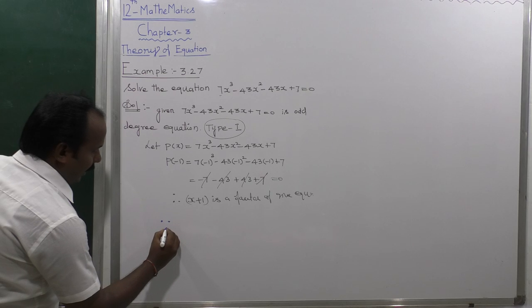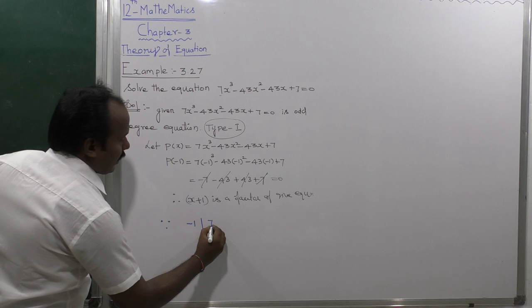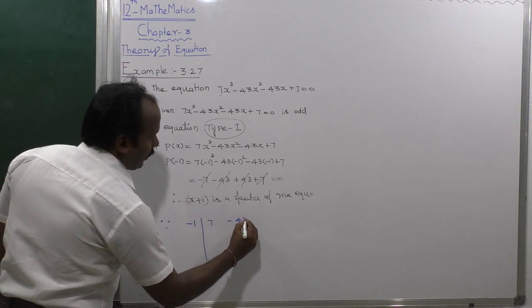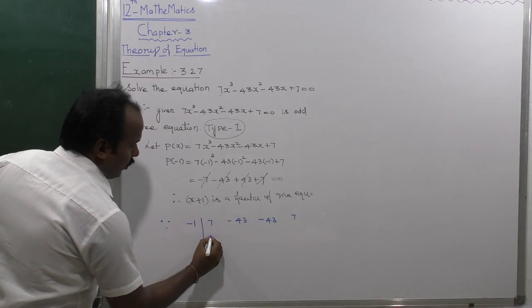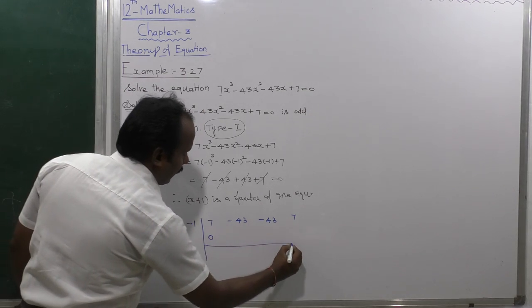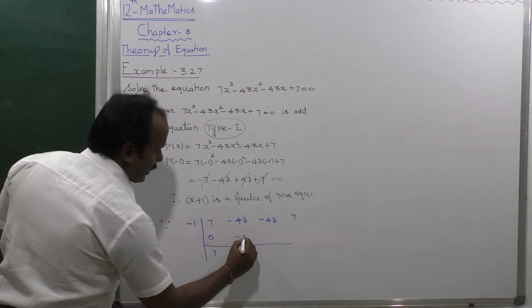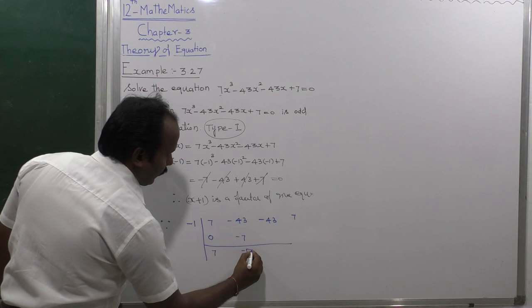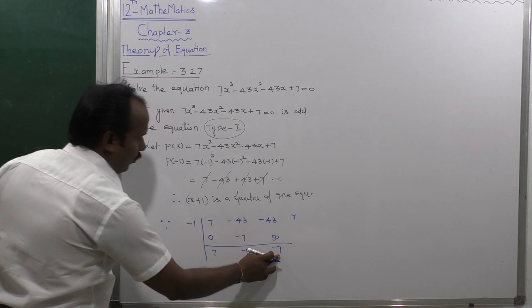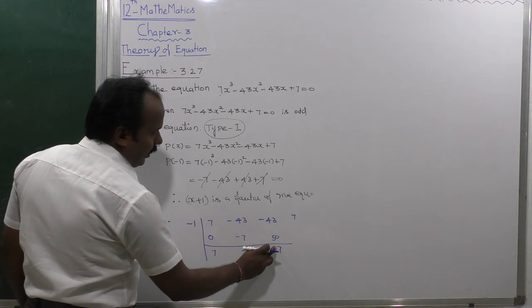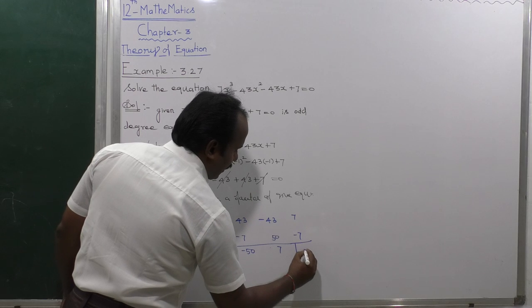Using synthetic division with root -1, the coefficients are 7, -43, -43, 7. Bring down 7. Then: 7 × (-1) = -7, so -43 + (-7) = -50. Then: -50 × (-1) = 50, so -43 + 50 = 7. Wait — -50 × (-1) = 50, and -43 + 50 gives the next value. Finally: 7 × (-1) = -7, and 7 + (-7) = 0. Remainder is 0.